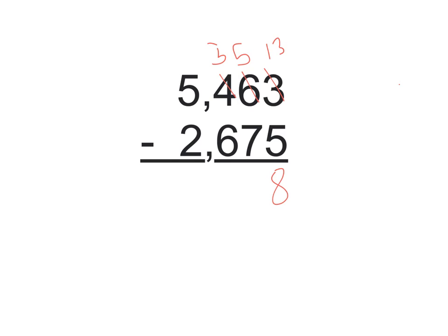And one of those 100s is going to ungroup and make 10,10s, which adds to my currently 5,10s, so that's going to give me 15,10s. And 15 take away 7 is also 8.